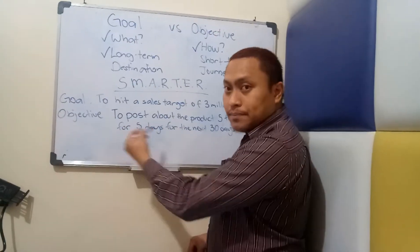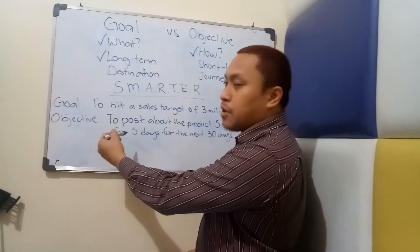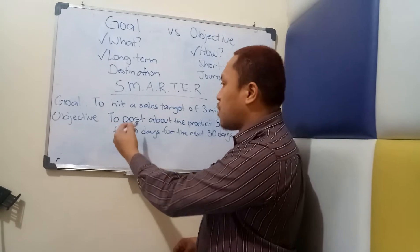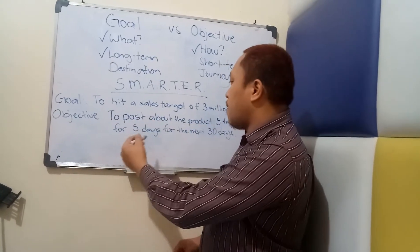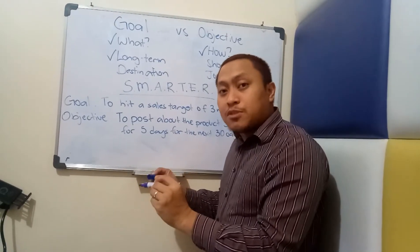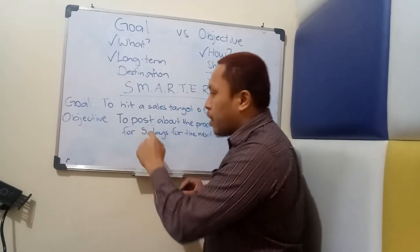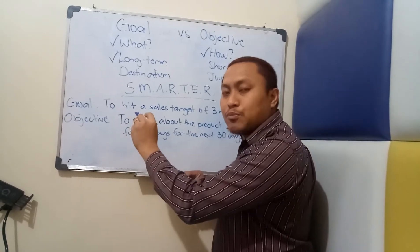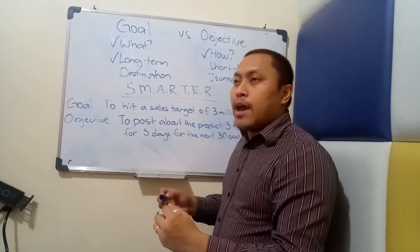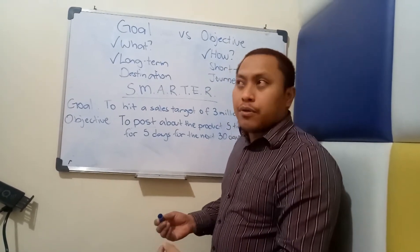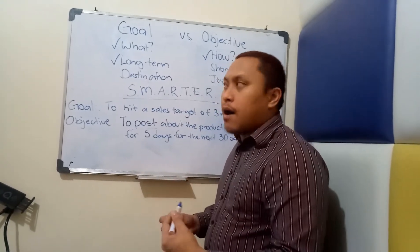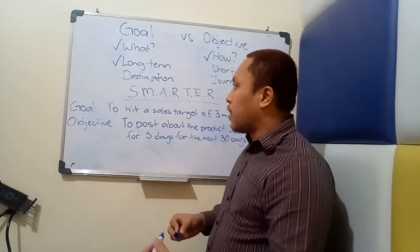This is already specific because it tells the doer that to hit a sales target of three million through digital marketing, he or she has to post about the product five times a day for five days for the next 30 days. One more thing about your objective being specific is that you have to be very careful with the verb or action word you're choosing — it has to be observable and measurable. You can't just choose any action word that you can't justify or that has no quantifiable basis for it.